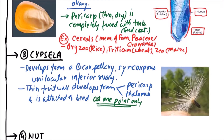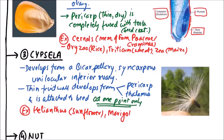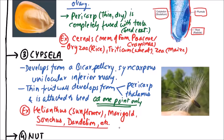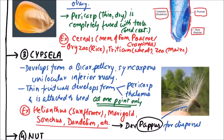Examples of cypsela include Helianthus, also known as sunflower, marigold, Sonchus, dandelion, etc. In Sonchus or dandelion, cypsela develops pappus for dispersal. These are the pappus for dispersal, and this is the fruit.